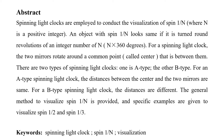Here is the abstract. Spinning light clocks are employed to conduct the visualization of spin 1 over n, where n is a positive integer. The object with spin 1 over n looks the same if it turns around an integer number of n revolutions. For a spinning light clock, the two mirrors rotate around a common point called the center. There are two types: A-type, where the distances between the center and the two mirrors are the same, and B-type, where the distances are different.